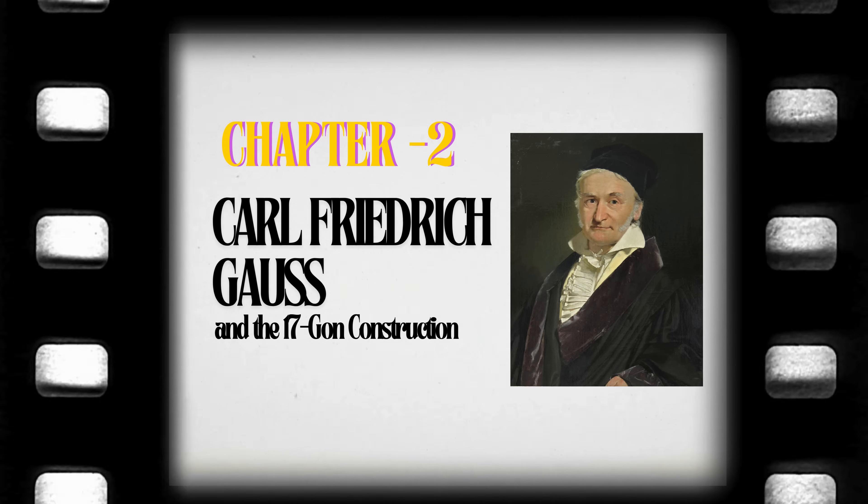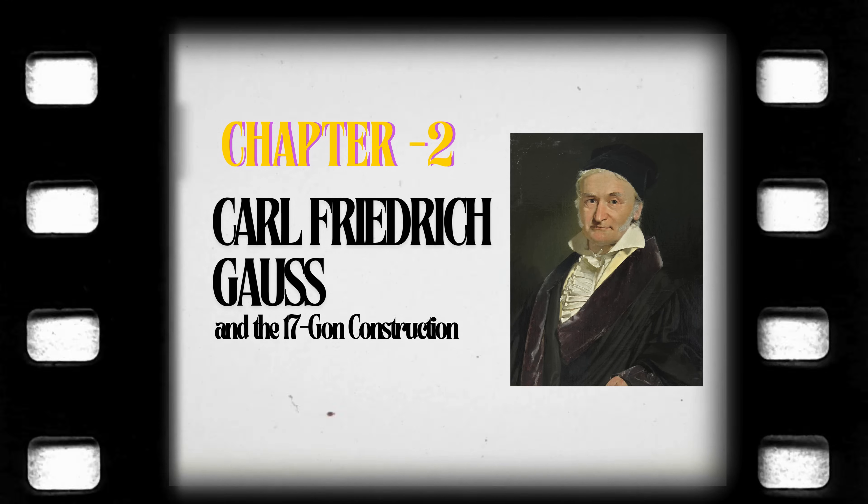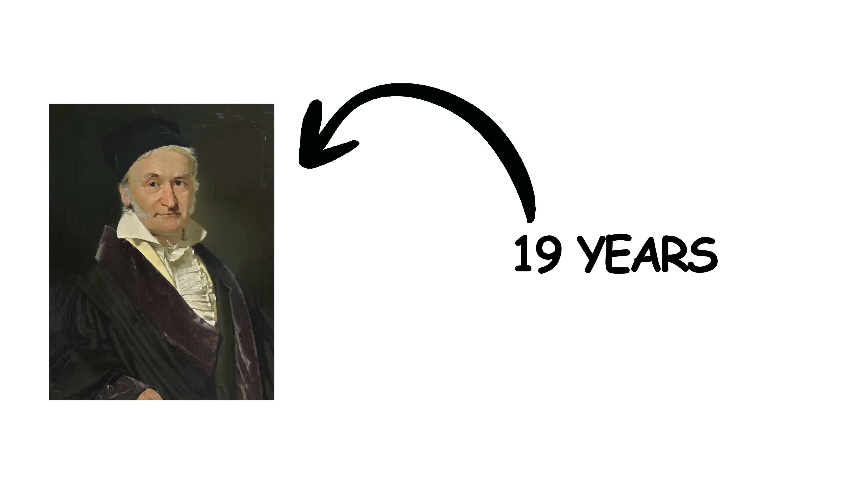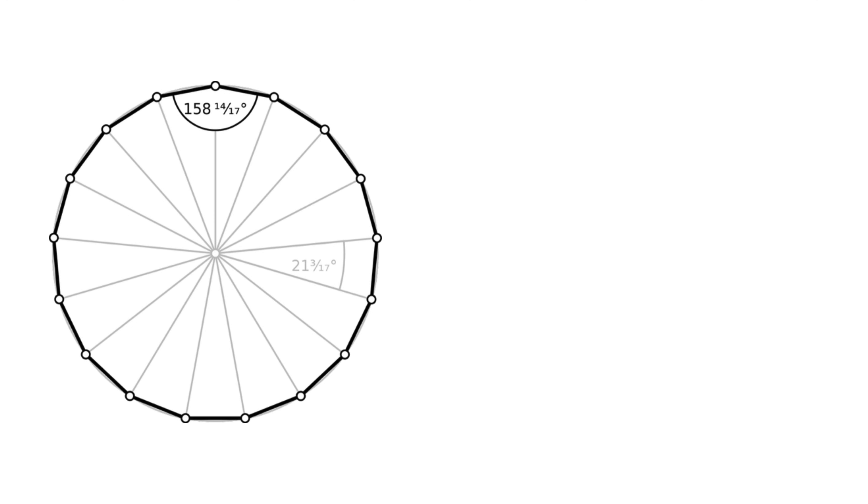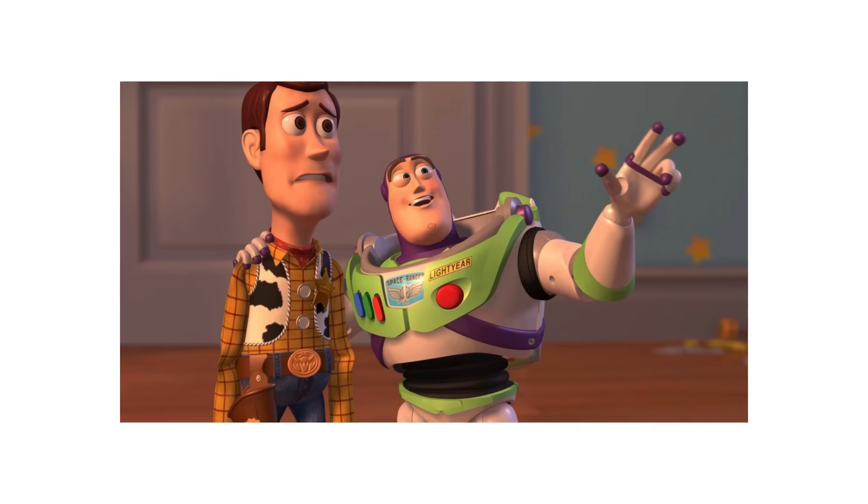Carl Friedrich Gauss and the 17-gon construction. In 1796, at the age of 19, Carl Friedrich Gauss astonished the mathematical world by demonstrating that a regular 17-sided polygon, also called a heptadecagon, could be constructed with a ruler and compass, something that had not been achieved since the time of the Greeks.